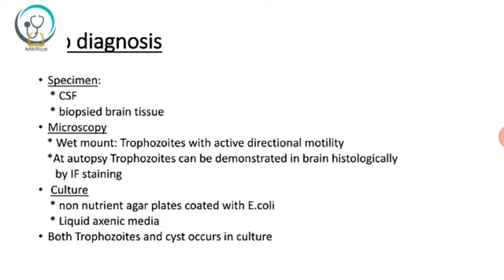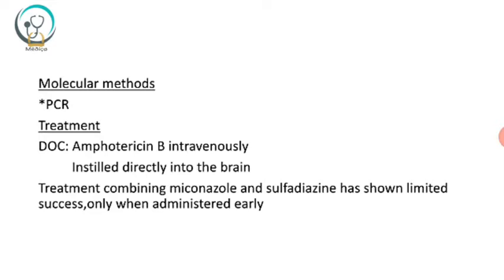For lab diagnosis, specimens used are CSF and brain tissue biopsy. In microscopy, wet mount detects trophozoites with active directional motility. At autopsy, trophozoites are demonstrated in brain tissue histologically by H&E staining. Culture is done on non-nutrient agar plates coated with E. coli and in liquid axenic media; both trophozoites and cysts occur in culture. PCR is preferred for molecular methods. The drug of choice is amphotericin B given intravenously and instilled directly into the brain; treatment combining miconazole and sulfadiazine has shown limited success when administered early.